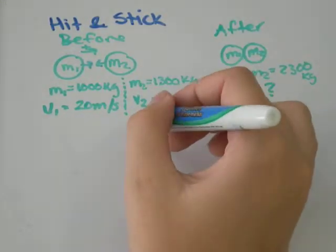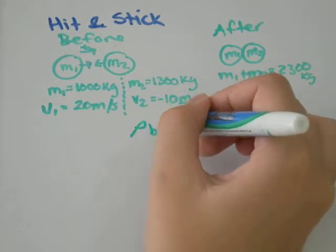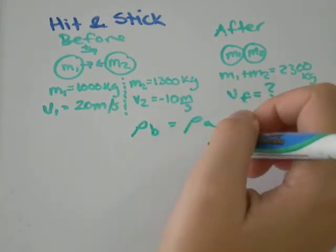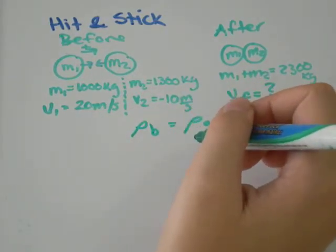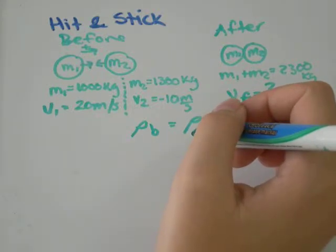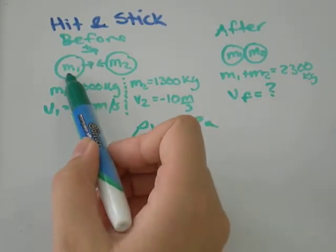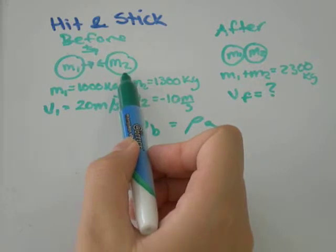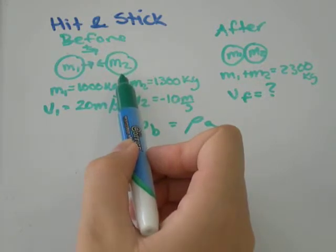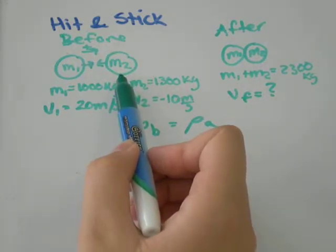So as always, we're going to say momentum before equals momentum after. Momentum is the measure of mass times velocity, so we have two separate situations. The momentum of the first mass and the momentum of the second mass. Together they make up the total momentum before.